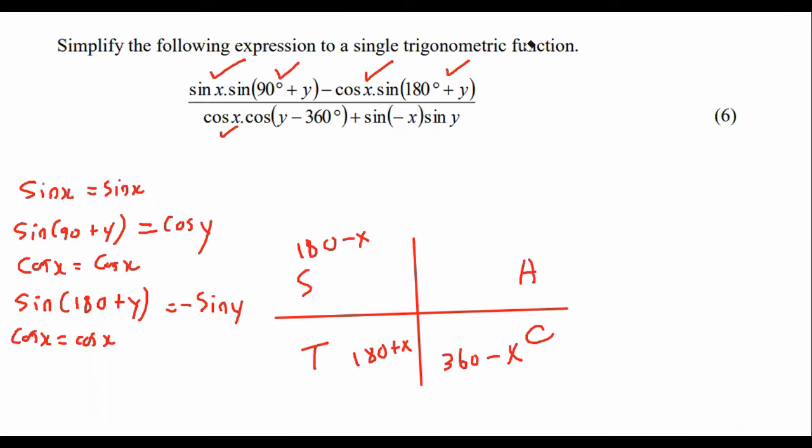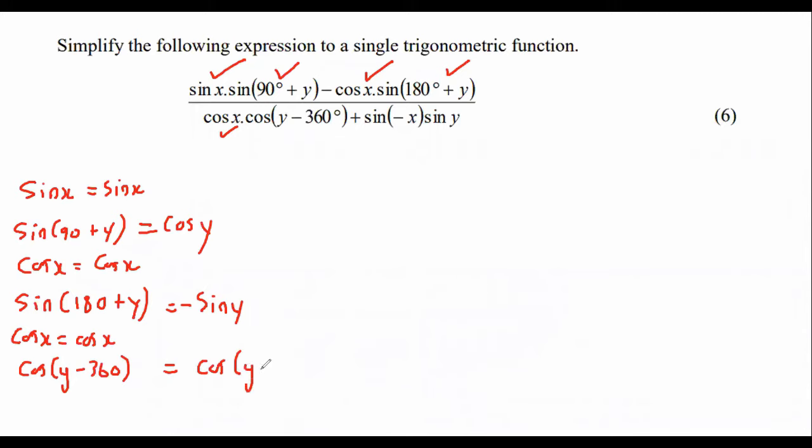So what do we do? What we do instead is we either minus 360 degrees or we add 360 degrees. Because mathematically, if you are here, for example, if you add 360 degrees, you're still going to be at the same place. So mathematically, you are not really changing anything. So if I have cos of y minus 360, what I would do is I would add 360 to that. And that actually just becomes cos y. So that's nice. That's easy.